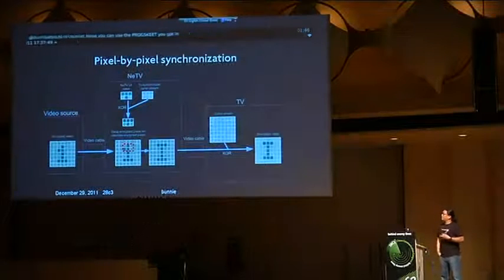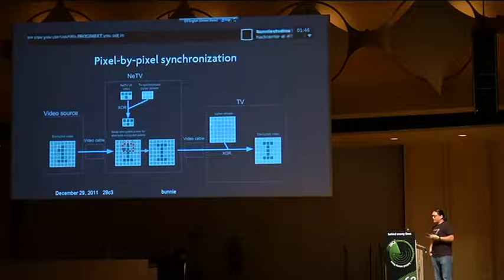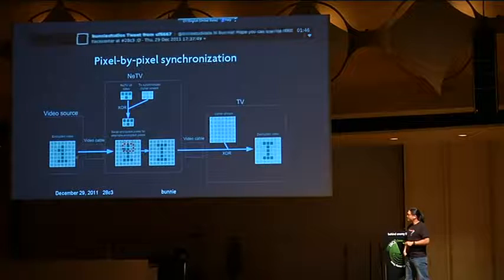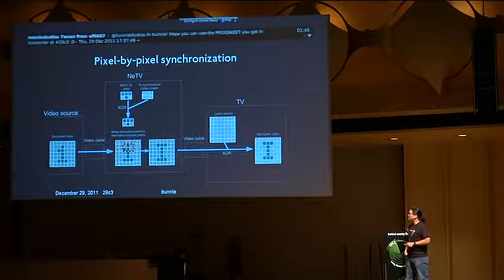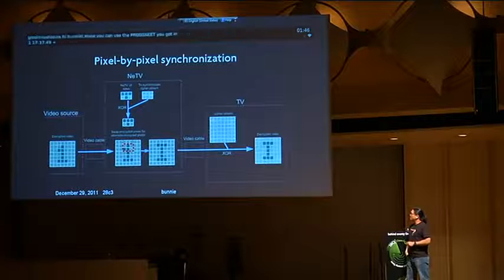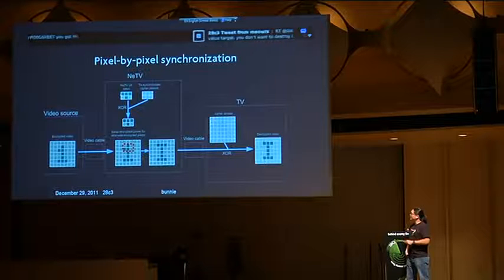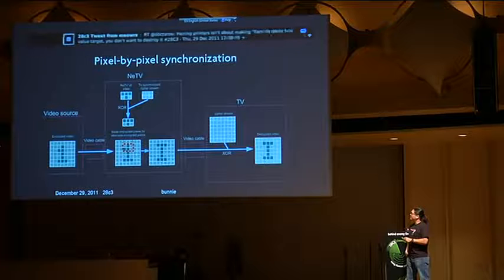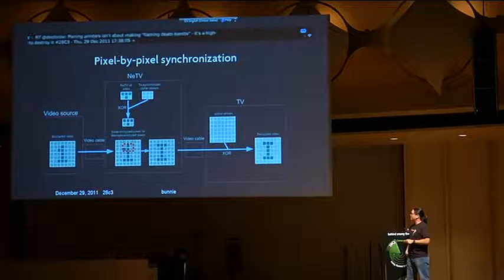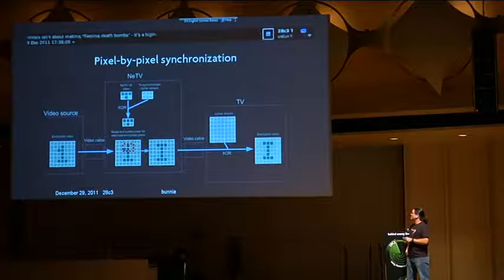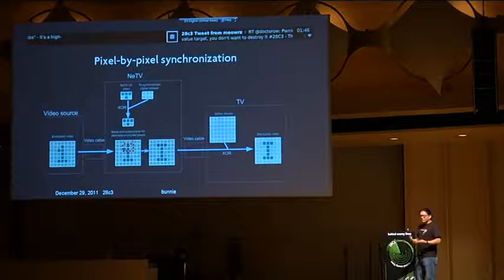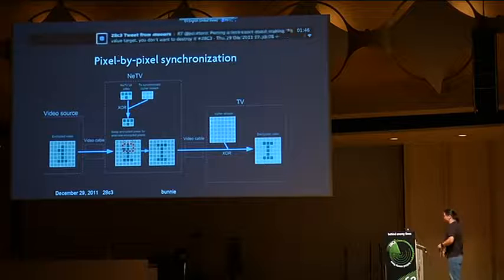To recap how the pixel-by-pixel swapping happens: here is the encrypted video — it's been XORed, it's like the number one. It goes over a cable. We synchronize pixel by pixel, and then the TV renders only the portion of video we want to swap out. It encrypts it with a synchronized cipher and swaps those pixels with the ones I've encrypted. On the TV side, when you decrypt it, instead of getting the number one, you get the letter I. That's how the overall system works.